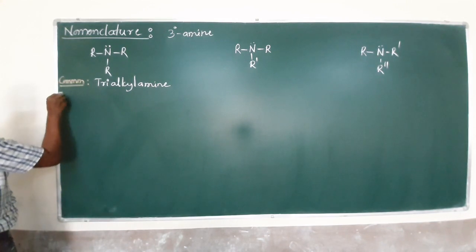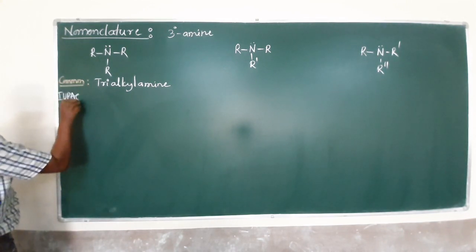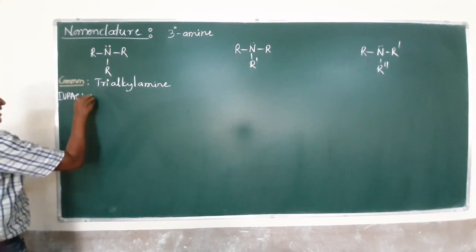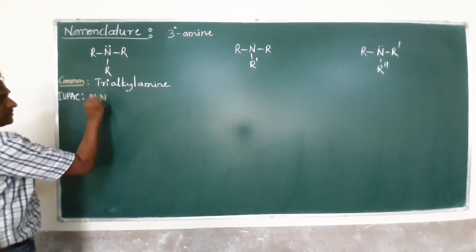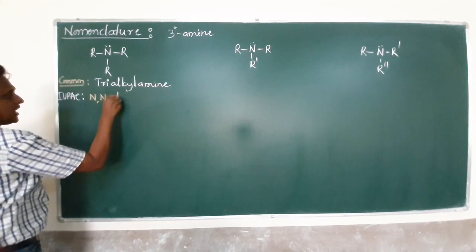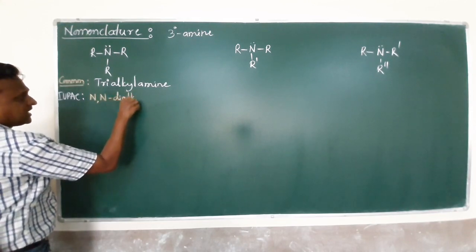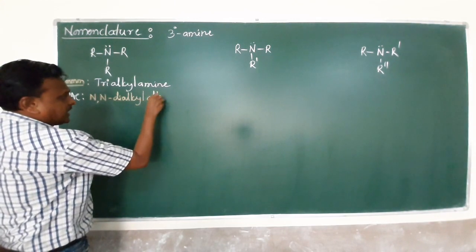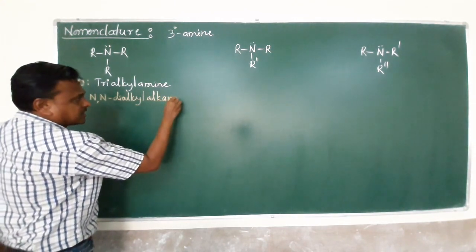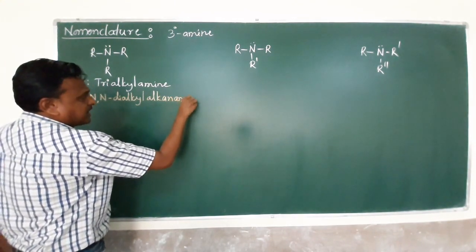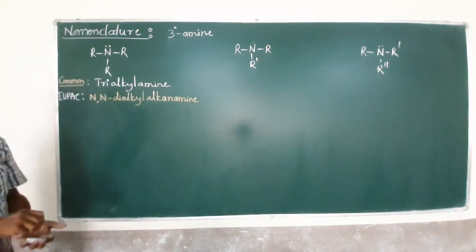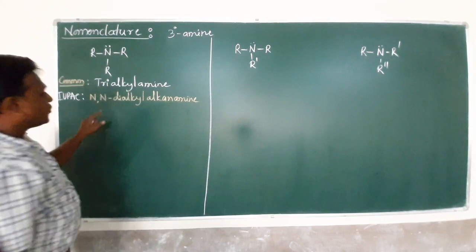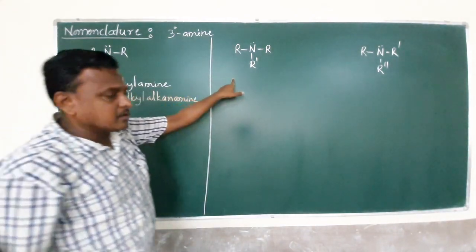What about the IUPAC nomenclature? In IUPAC, we consider two alkyl groups as a prefix: N,N-dialkyl. Then the longest alkyl chain is named as the parent alkane with the suffix '-amine'. So the IUPAC name is N,N-dialkyl alkylamine.